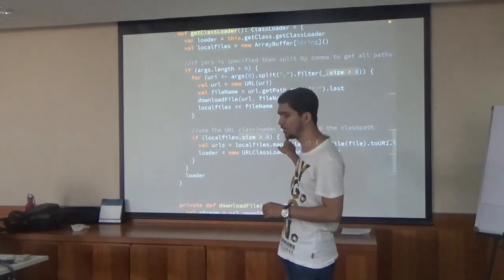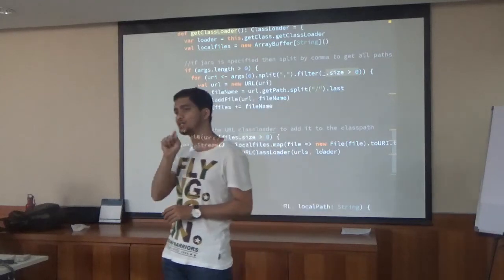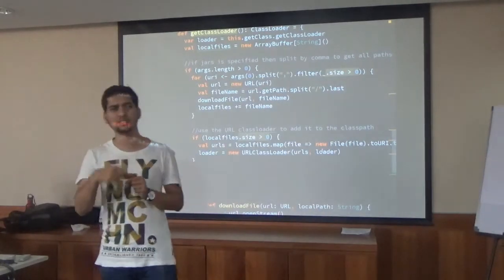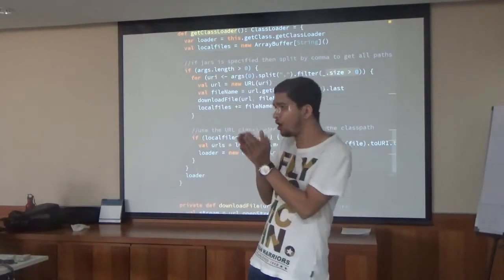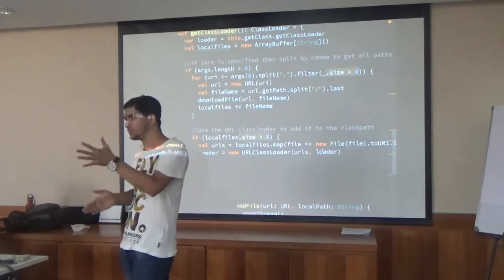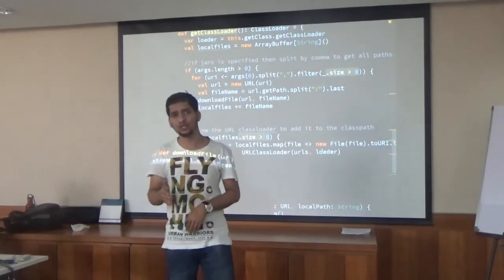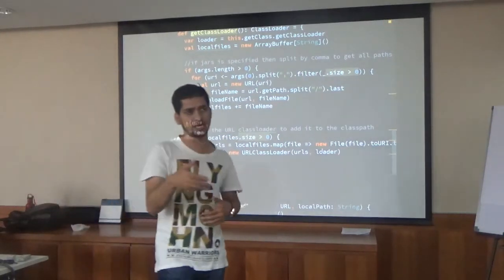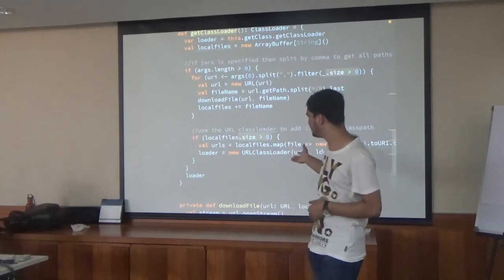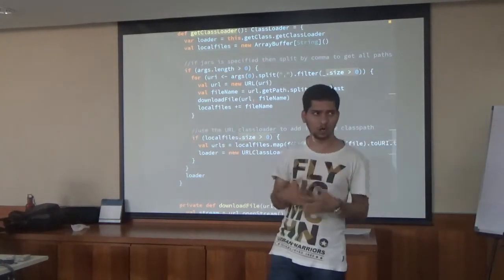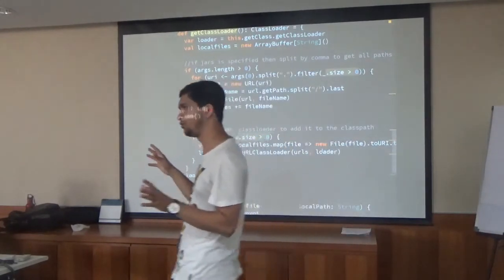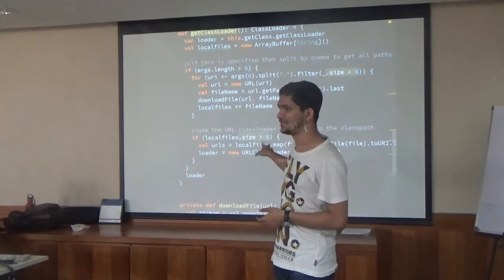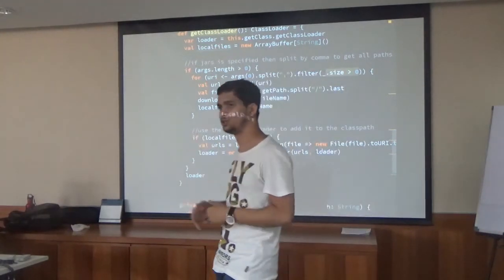One advantage of URL class loader is that I can decide the order in which jars are added. In Spark there is an option to say first put user libraries, then framework libraries — so your libraries are first in the classpath. In Java, whatever class it finds first in the classpath, it picks up that one and doesn't scan anymore. So you can control class resolution order using the URL class loader. What we have done is: go to the scheduler, get all the files, then execute. We created an HTTP server, a scheduler that runs it, and an executor that downloads files and creates a URL class loader to load them into the JVM.